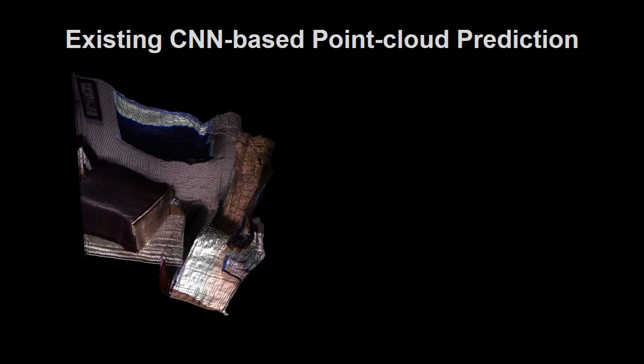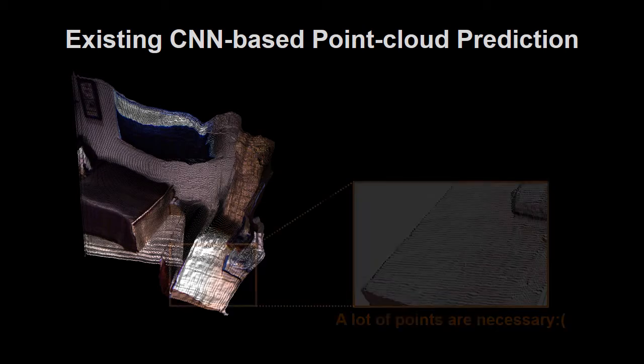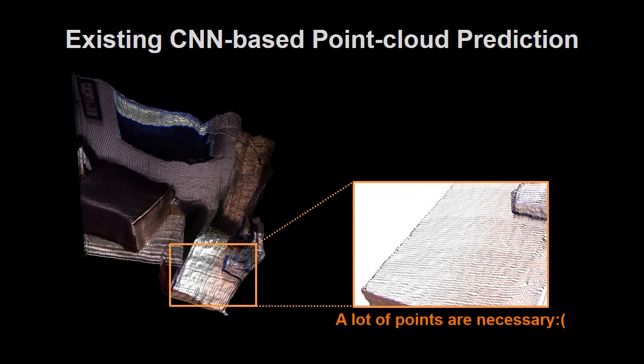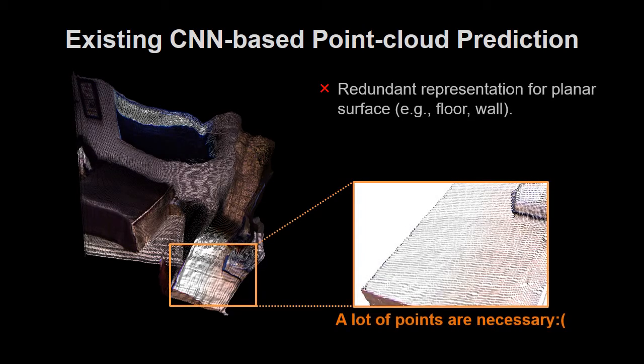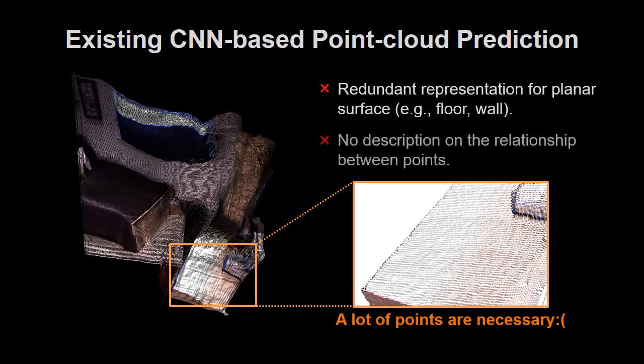Generally, point cloud representation is used for CNN-based 3D scene reconstruction. But point clouds need a lot of parameters — it's redundant for planar surfaces such as floors and walls. Moreover, there are no descriptions of point relationships.